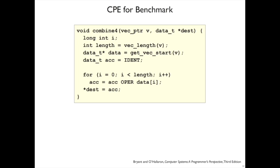Let's take this information and see what it means for our benchmark from last time. We have combine4 that's parametrized over multiplication or addition and parametrized over integers versus floating point numbers.